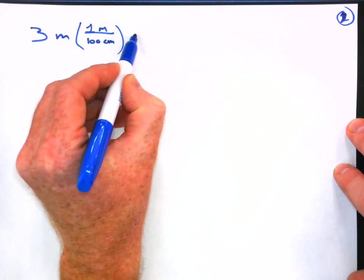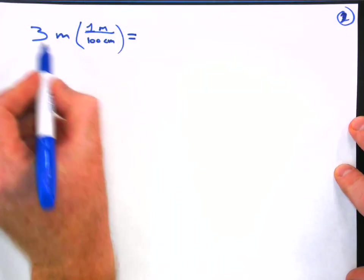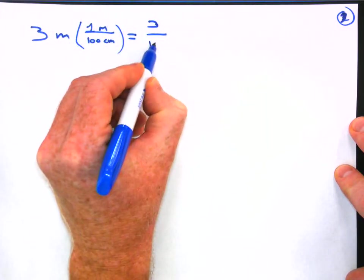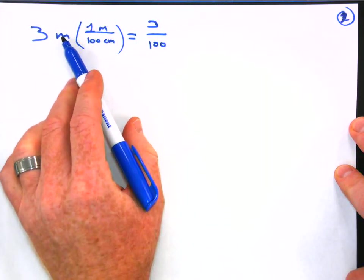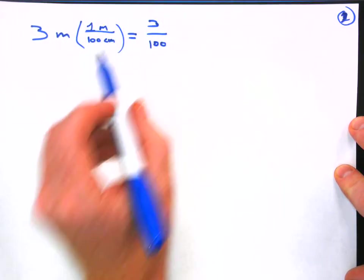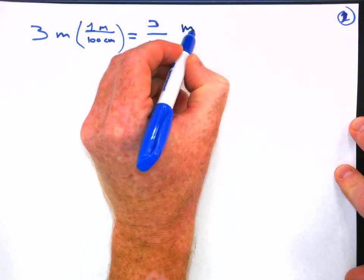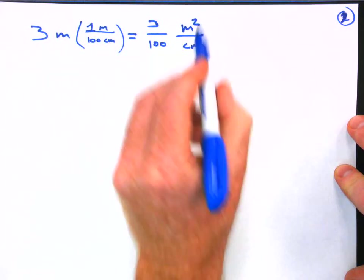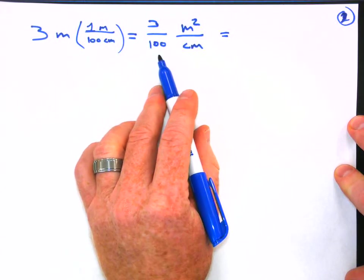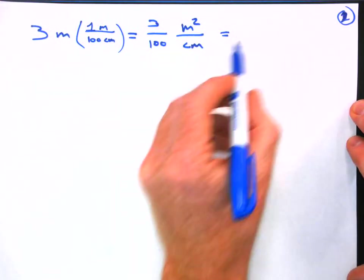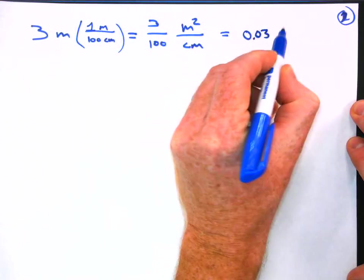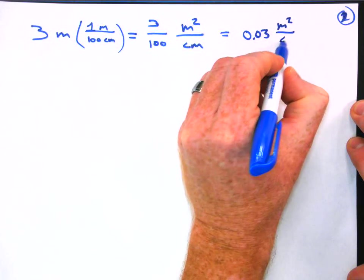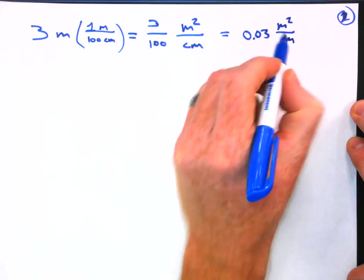But let's see what happens. So we're going to have three times one is three divided by 100. And now the units, we have meters times meters and we're dividing by centimeters. So this ends up being meters squared divided by centimeters. And to finish this off, we don't want to leave an answer in fraction form. This is going to be 0.03 meters squared per centimeter.